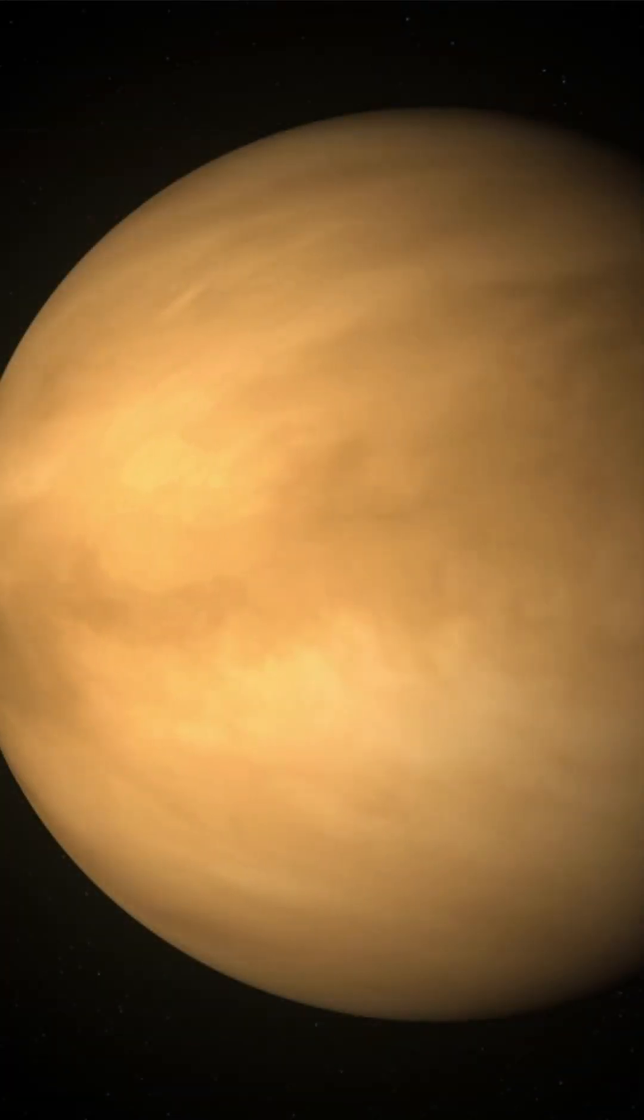We all know that the closest planet to Earth is Venus, which is often referred to as Earth's sister planet, due to its similar size and composition.